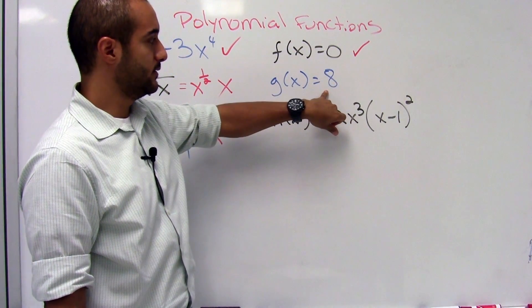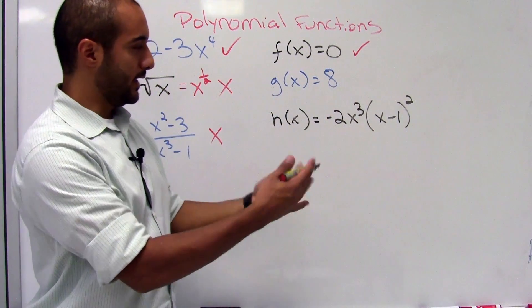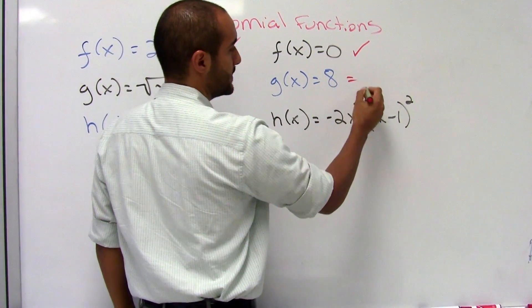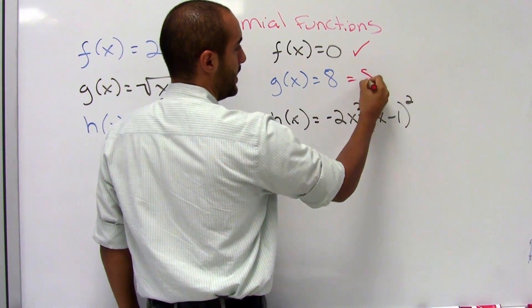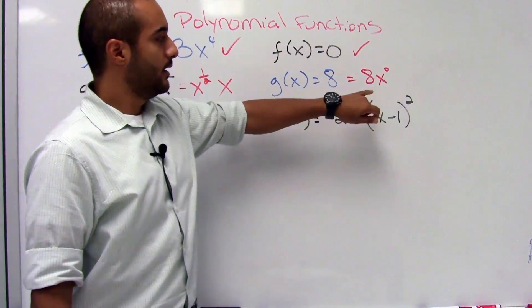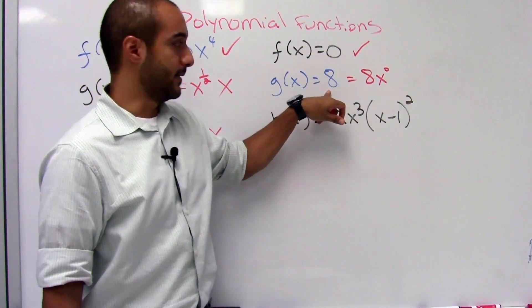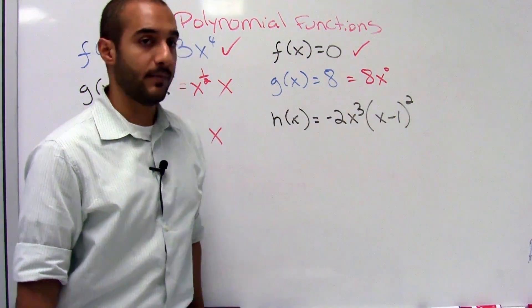And likewise, here for g of x equal to 8, this is also a polynomial function. If we were writing the whole thing out, we can say that this would be the same as writing 8 to the x to the zero power. And notice that here that would just simplify to 1, and you get the same thing here again. So this is considered a polynomial function.